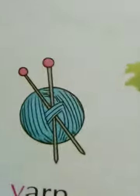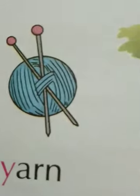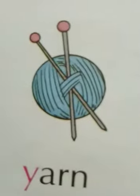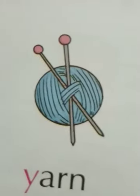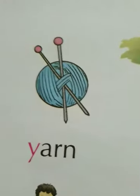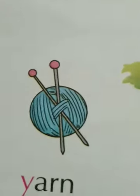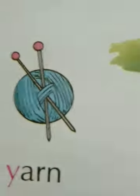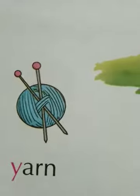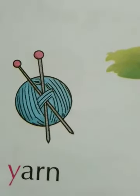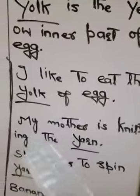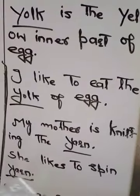Y is for yarn. Yarn hum fiber ko kehte hain. Yarn is a fiber. Ye cotton ka fiber ho sakta hai, nylon ka fiber ho sakta hai, wool ka fiber ho sakta hai. Yarn is a thread made of natural or synthetic fibers. Isko hum urdu mein soot kehte hain. My mother is knitting the yarn. She likes to sew with yarn.